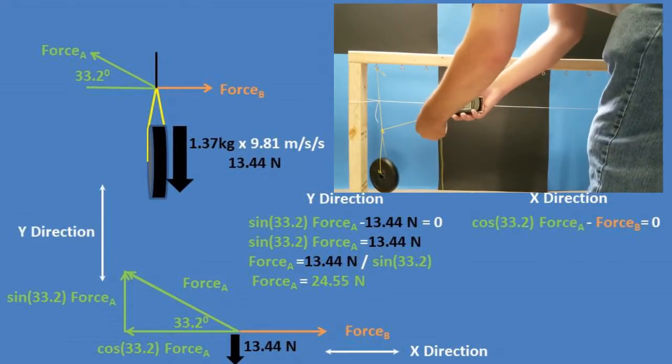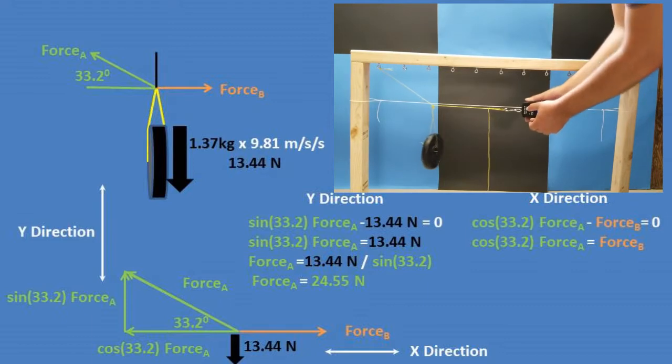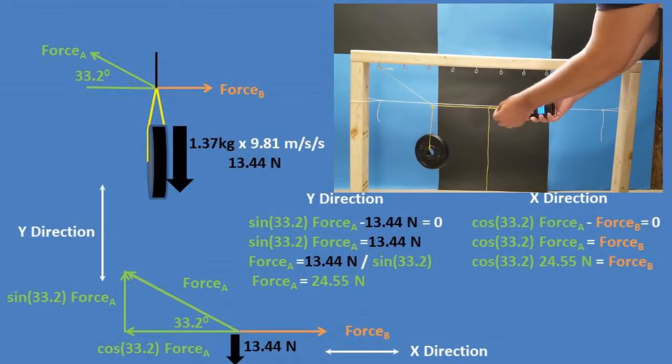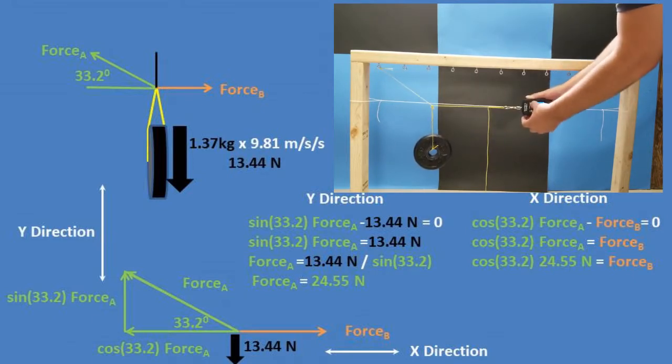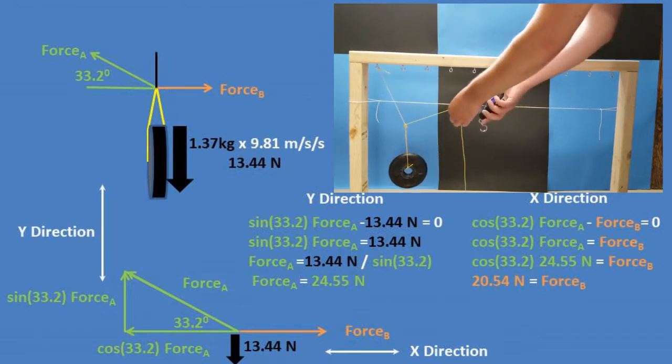Now, we can start working on the x direction formula. We can start by moving force B to the other side of the equation by adding it to both sides. For the next step, we will plug in what we found force A to be equal to into the equation. So, we plug in 24.55 newtons into the equation. Now, we can plug this equation into our calculator. We get a tension force of B of 20.54 newtons.